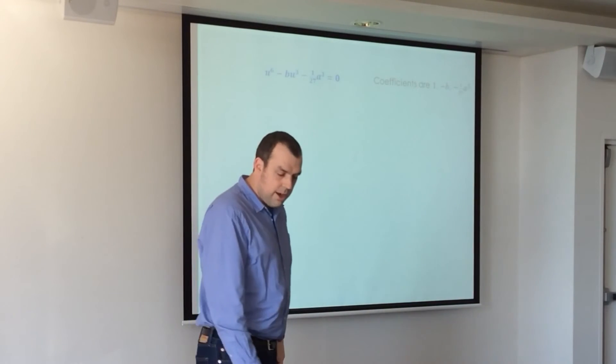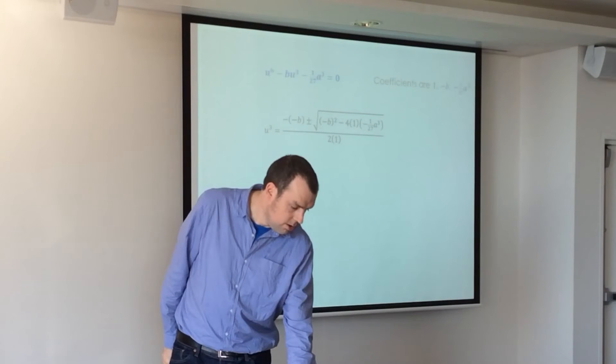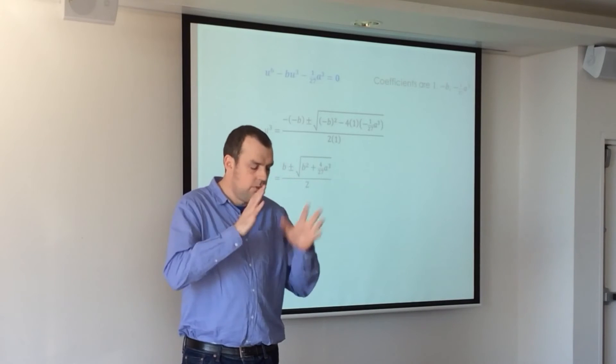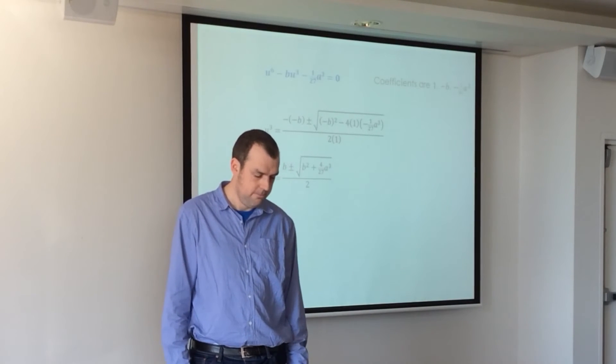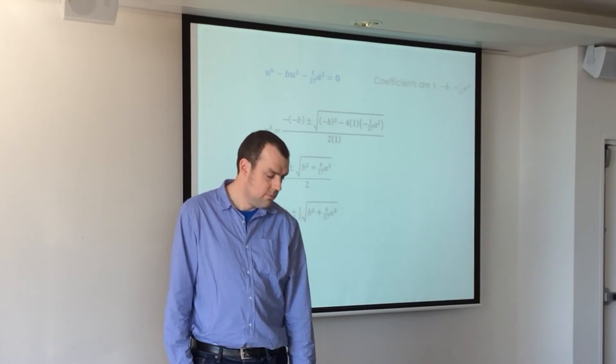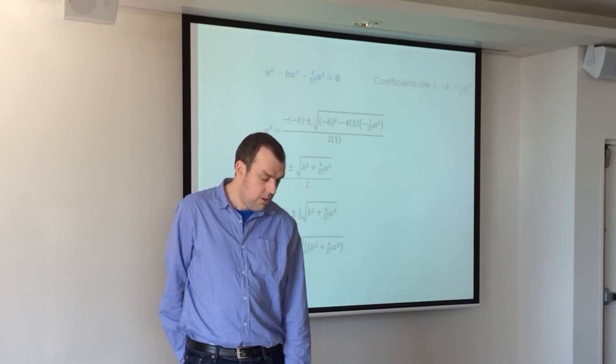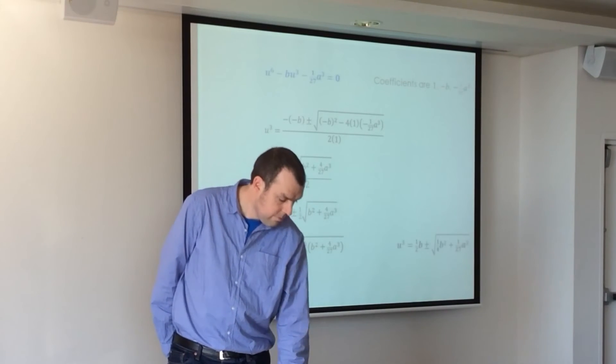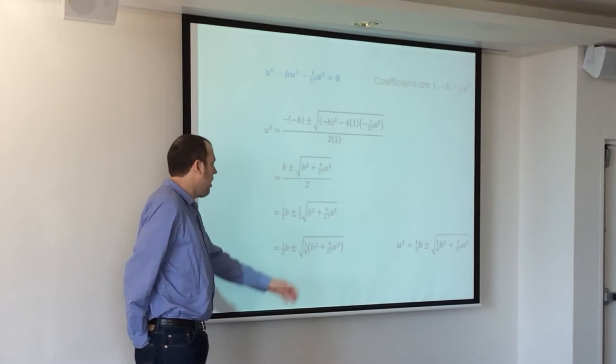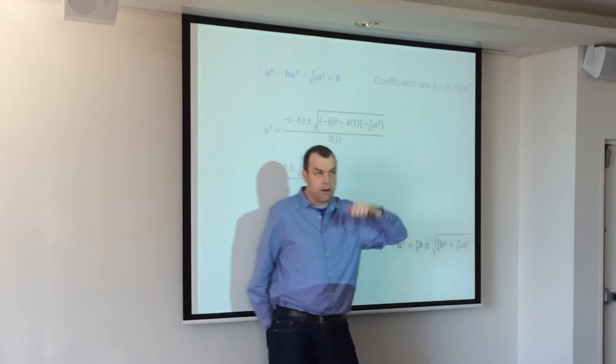Okay, so our coefficients are 1, negative b and that. So we summed them into our quadratic formula. Simplify. I'll just go through it sort of slowly if you want to quickly check that things are working. Get rid of that big fraction. Put the half inside the square root. And expand. And that's where we leave it, for u cubed, right? So we've got u cubed equals half b plus or minus that. And we saw that expression somewhere in one of the summaries before.